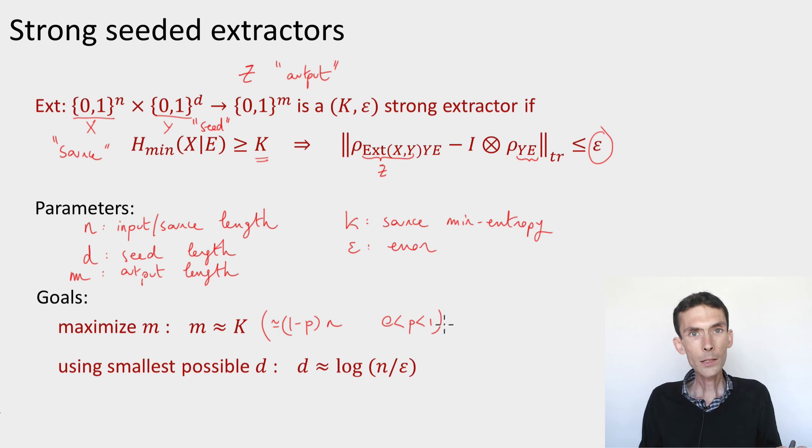And so we'd like to come up with a procedure that extracts as many bits as possible. And so we want to maximize the output length m. And in this case, we'd get an m, maximum m, which is about the uncertainty K. So our goal is to get to m's that are roughly as large as min entropy K.